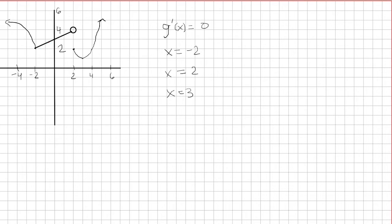Let's first look at x equals negative 2. And by the way, this is the graph of g of x. So at x equals negative 2, we have a cusp here. So whenever we have a cusp or a corner, the derivative is undefined.